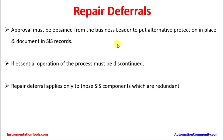Approval must be obtained from the business leader to put alternate protection in place and document in SIS records. Whenever SIS instruments are not available and the plant must continue running, alternate protection is required to maintain the safety integrity of the plant. If essential operation of the process must be discontinued, repairs or proof testing must be completed, potentially requiring a plant shutdown. Repair deferrals apply only to those SIS components which are redundant.